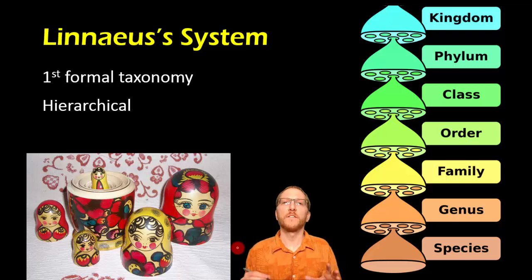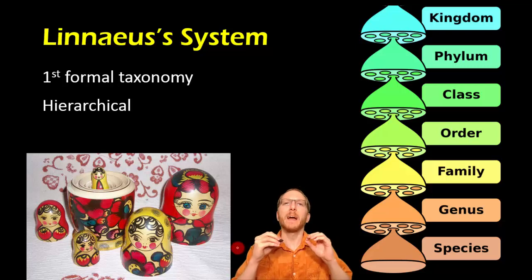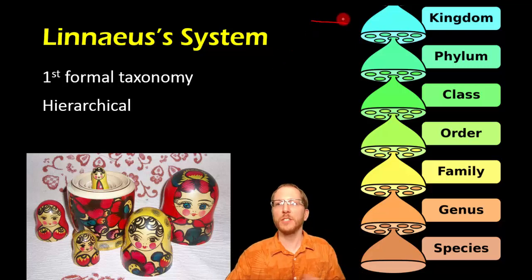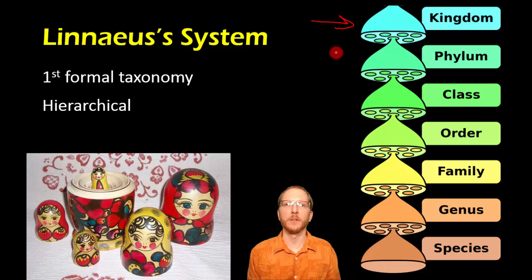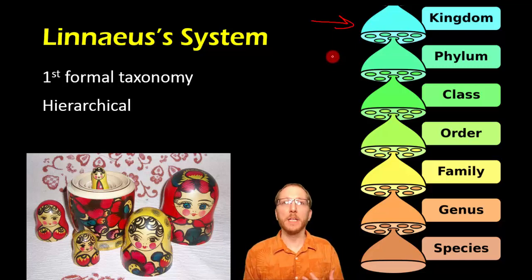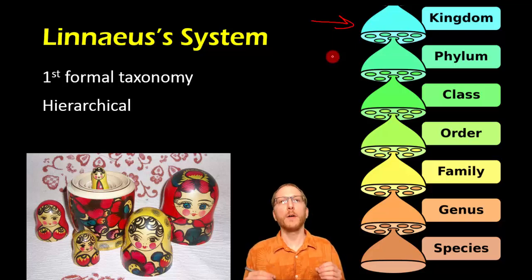Linnaeus was the first guy to come up with a really formal system that was much more complex and much better suited to group things to a more minute level. Linnaeus's system was hierarchical, where he said we're going to have these big kingdoms — which starting off was pretty much plants and animals still. Underneath kingdoms, you're going to have phyla. These are going to be smaller than kingdoms, but they all belong to the same kingdom. So in the case of Animalia, the animal kingdom, all of the phyla below Animalia belong to Animalia — they are animals.